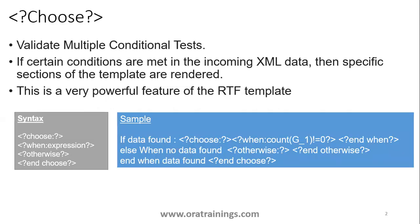Using choose, we can validate multiple conditions. If you observe the syntax, in the choose, the keyword starts with the choose tag, and there's a starting tag of choose and an ending tag of choose. In between, inside the choose, we can have a when condition — when a particular condition is validated, what do you want to do? You can mention multiple when conditions. And finally, if none of the when conditions match, if you want a default condition, you can have it as otherwise.